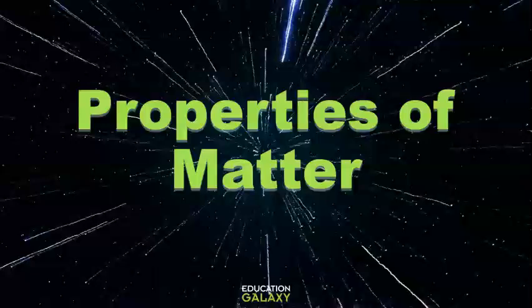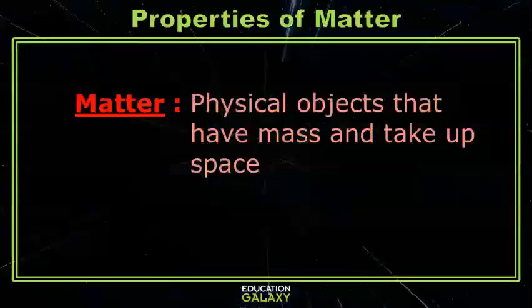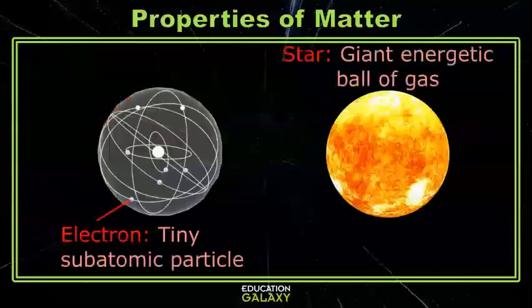Hey scientists, let's talk about some of the different properties of matter. Matter means anything that has mass and takes up space, so basically all of the physical stuff in the universe, from tiny little electrons to massive stars. Each piece of matter has different properties that we use to describe, classify, and group them.